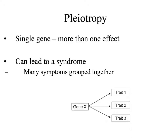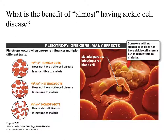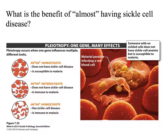Another interesting case is pleiotropy — when a single gene affects more than one phenotype. This often leads to syndromes, which are many symptoms grouped together under one category, often caused by a problem in one or very few genes. Sickle cell anemia is an example of pleiotropy. One gene has a mutation in it which affects many different parts of our physiology. People with sickle cell not only have the crescent moon-shaped cells, but also have problems carrying oxygen and many other correlated symptoms.